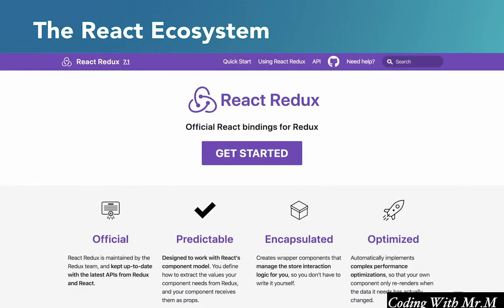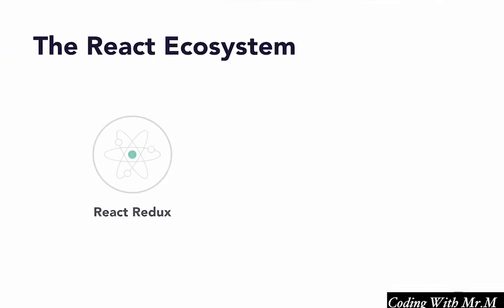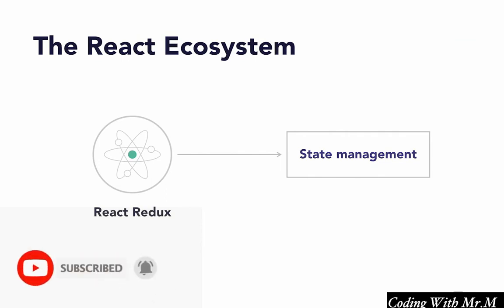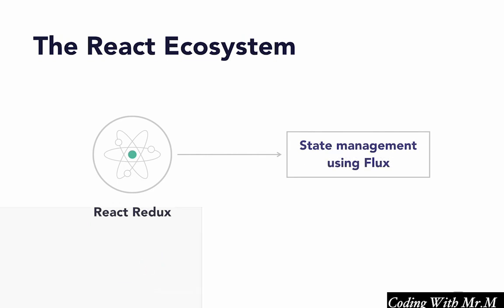The first tool we'll be learning about and incorporating into our codebase is called Redux. This is without a doubt the most popular add-on in the React ecosystem. Its main purpose is to help us manage the state of our React applications in an effective and relatively bug-free way. And to do this, it uses what's called the Flux Architecture, a very fancy name for a pretty simple concept which we'll go into more depth on later in the course.